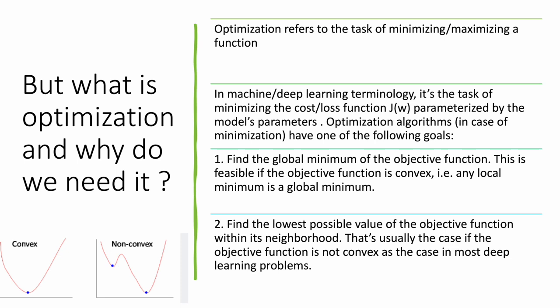What is the goal of the optimization algorithm? It is one of these two. If the function is a truly convex function — a nice ball-shaped function — on the y-axis is my cost or loss, on the x-axis is my parameter. If it is a nice ball-shaped function, there has to be one and only one global minima. So the goal of the optimization would be to find that global minima.